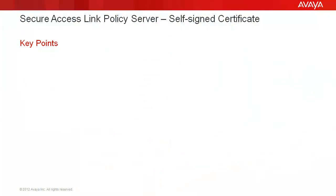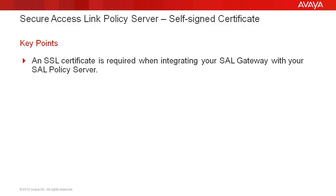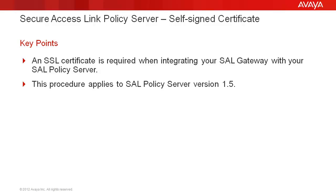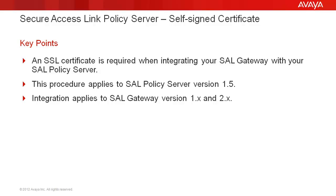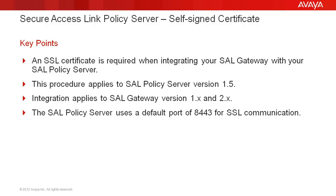Before we begin, keep the following points in mind about generating your self-signed certificate. Using an SSL certificate is required when integrating your SAL Gateway with your SAL Policy Server. This procedure applies to SAL Policy Server release 1.5. Integration applies to any release of SAL Gateway, including all 1.x and 2.x releases. The SAL Policy Server uses a default port of 8443 for SSL communication, and that is what we will use for this tutorial.